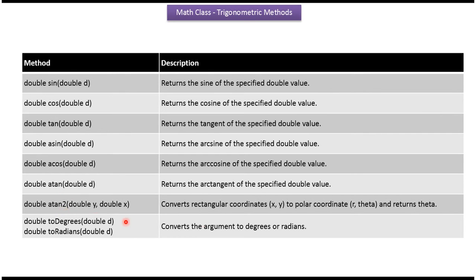Atan2 method converts rectangular coordinates x, y to polar coordinate r, theta and returns theta.